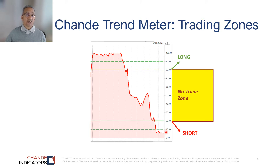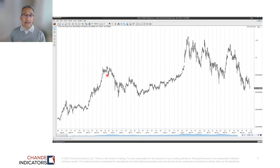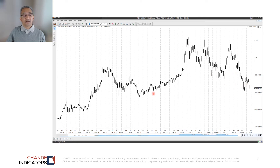Now we're ready to use the Trend Meter. This is a daily chart of Tesla starting in about August 2020 and ending in about June 2022. We can see there was a strong uptrend in late 2020, and then another surge in October 2021. In those two areas we should see high values of the Trend Meter.